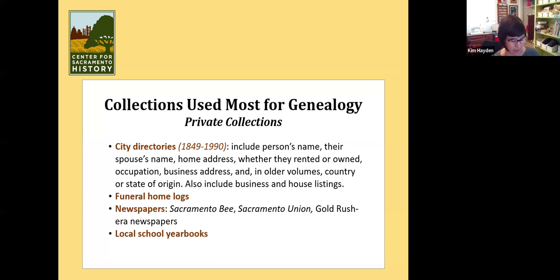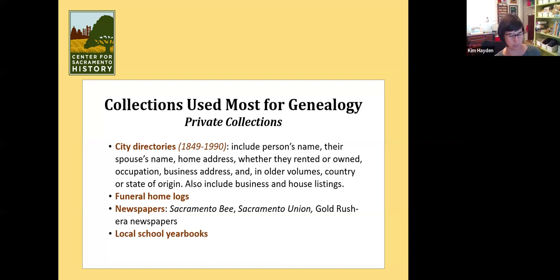Write this down if you don't know about it: the California Digital Newspaper Collection. That's where you're going to find the Sacramento Union and the Transcript. The Union started in 1851 and the Transcript around 1850–1852, so those are going to be your earliest newspapers. The Union is online and digitized through 1923 — it gets updated as public domain updates. That's a really great resource and it's also keyword-searchable. You don't need a library card or anything to research it. We do also have the original Sacramento Unions at our office.